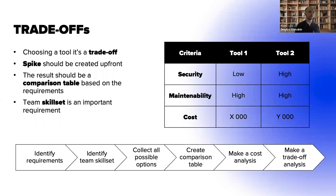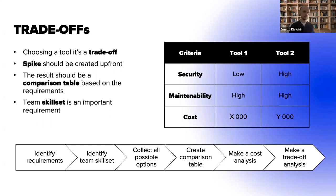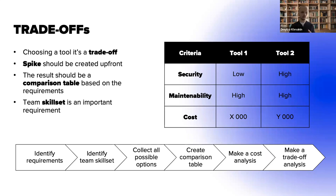Going deeper, on my previous project I faced trade-offs like which kind of Kafka to use — Event Hubs versus Kafka — or which CI tool to use: GitLab versus Jenkins versus something else. Going deeper into trade-off analysis, we need to carefully capture client requirements — mostly non-functional requirements — to understand what the client wants to resolve by implementing this or that tool.